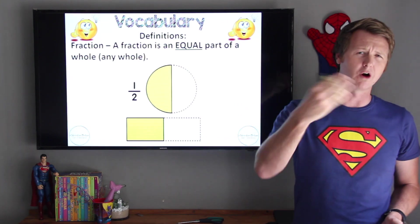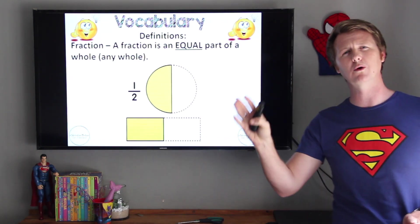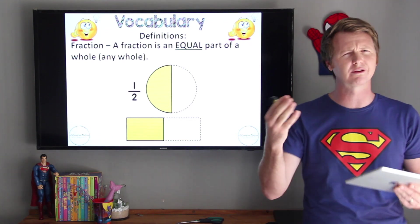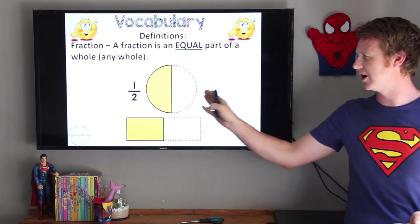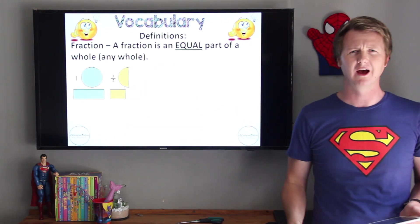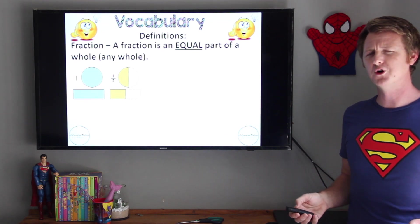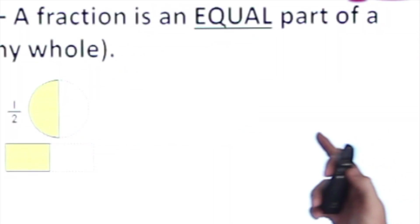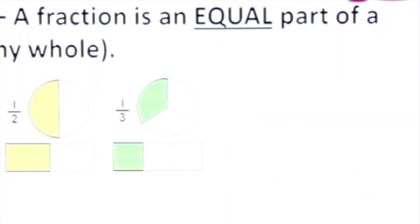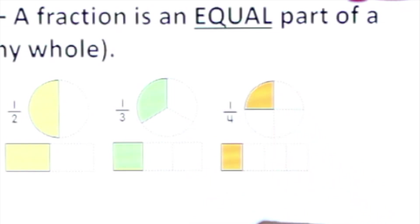Now I'm going to ask you — that's a whole and I've given you a half — so how would you represent a third in your mind? If you had to take this, how would that look? It's going to be that figure divided into three equal parts. And so we can carry on: when we get to a quarter, it is the same figure divided into four equal parts, as well as a fifth.